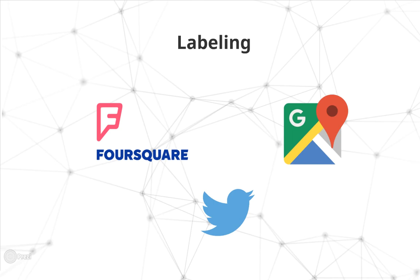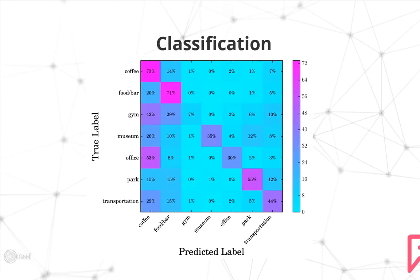Our first attempt at classification used semi-supervised learning. We confidently labeled several points with Foursquare data and then spread those labels to the rest of the points. Here's a confusion matrix with our results.